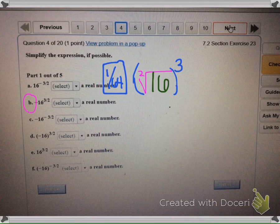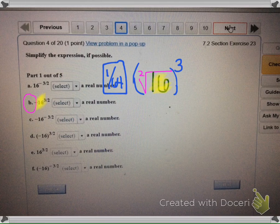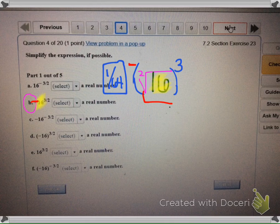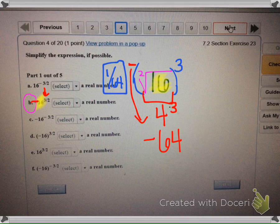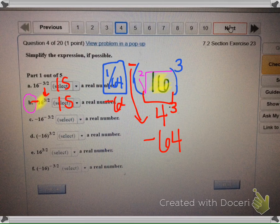Now if we look at b, we still have 16 inside here, but the only difference with this one is there's a negative on the outside here. So it's going to equal the same thing where the square root of 16 is 4, except there's no negative exponent. So 4 to the third is 64, and then that negative just gets brought down. That is a real number, negative 64.